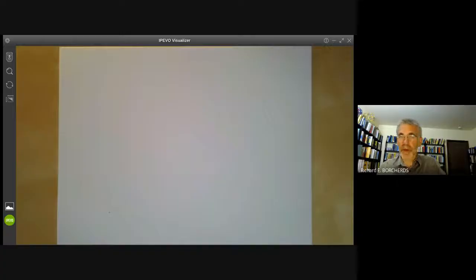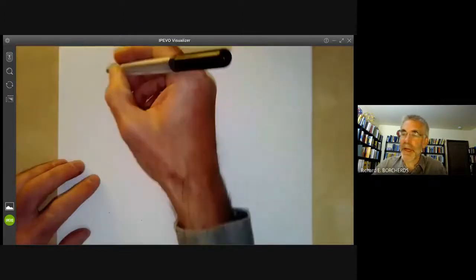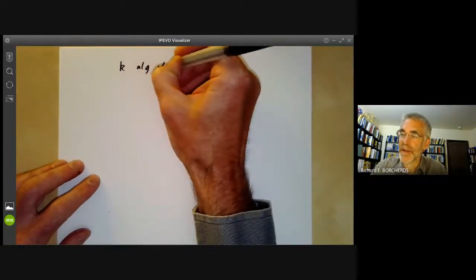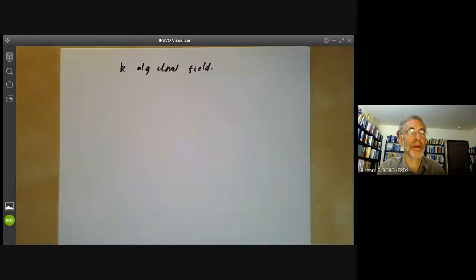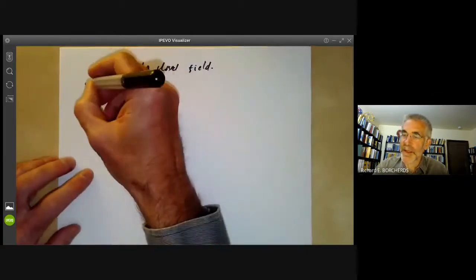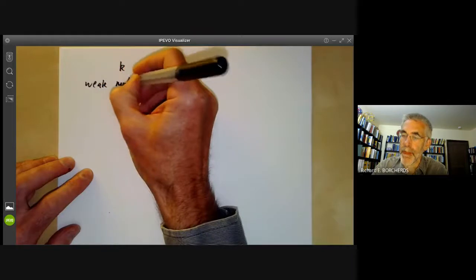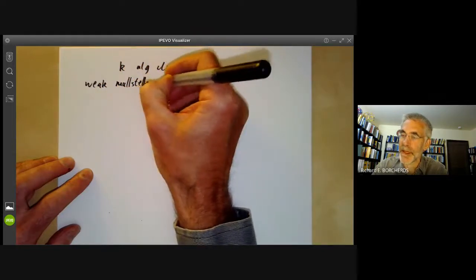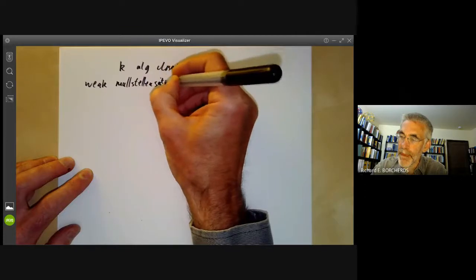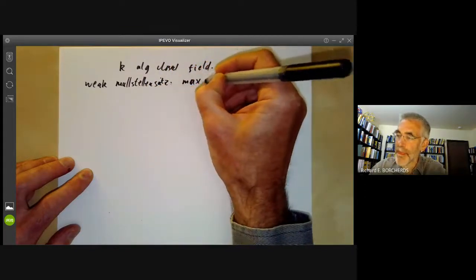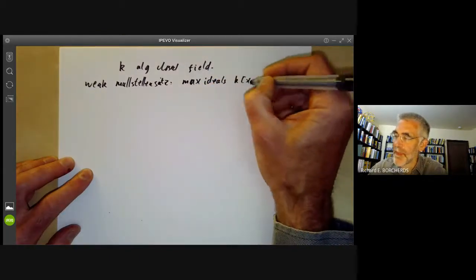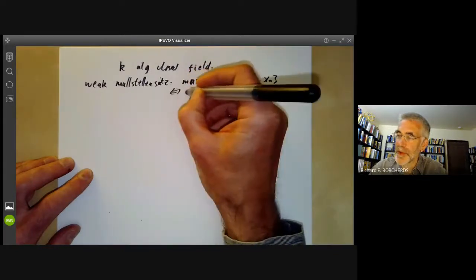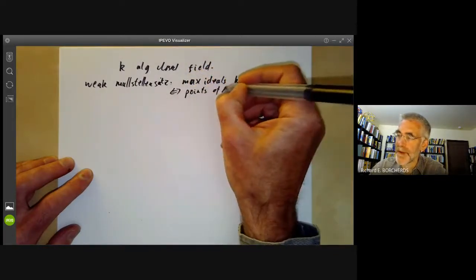So I'll start by just recalling the Strong Nullstellensatz. We're taking k to be an algebraically closed field, and we have the weak Nullstellensatz which states that the maximal ideals of the polynomial ring k[x1,...,xn] just correspond to points of affine space.